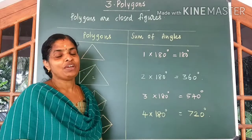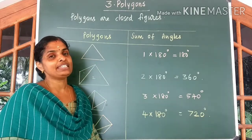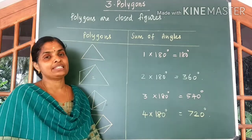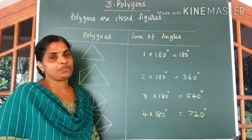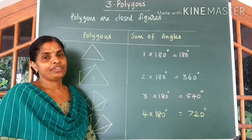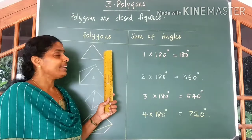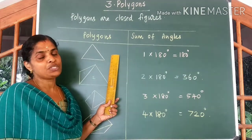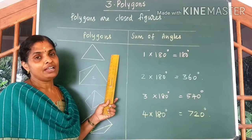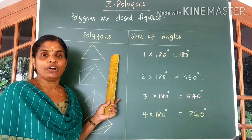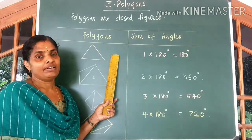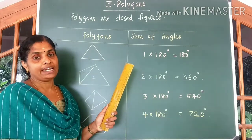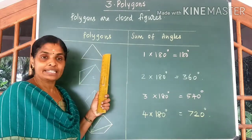Hi kids, welcome to the third chapter on polygons. A polygon is nothing but a closed figure. If you consider a triangle, this is a closed figure, so a triangle can be called as a polygon. The polygon with the least number of sides is a triangle.